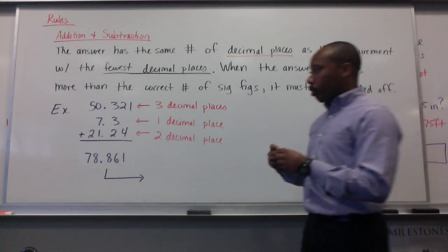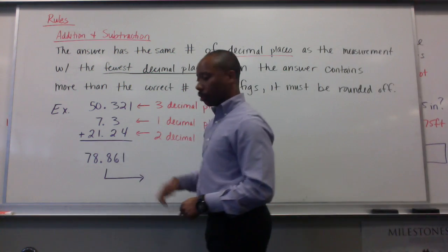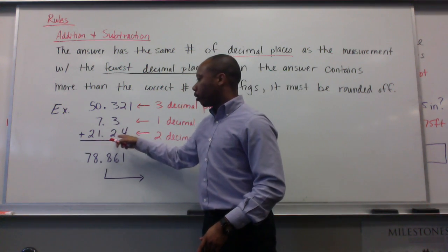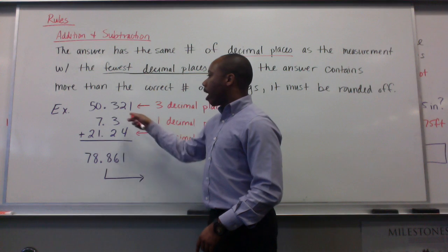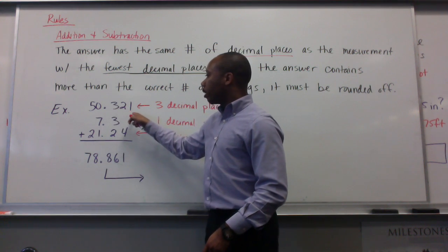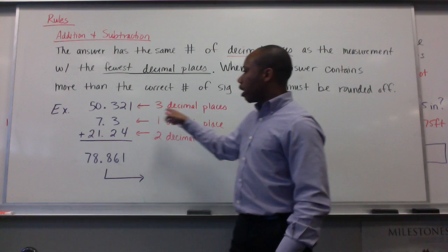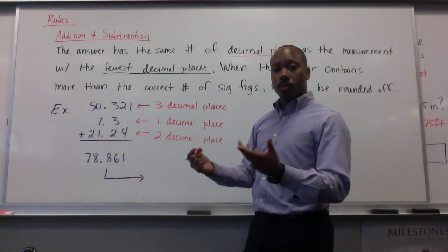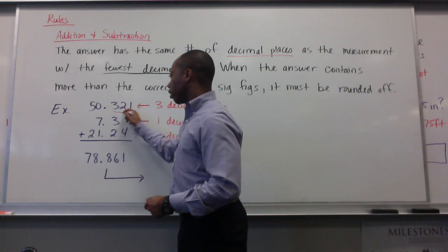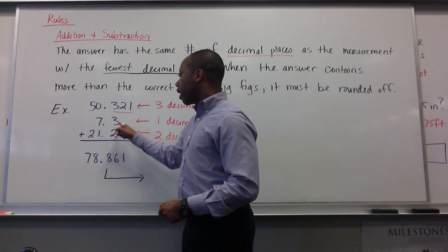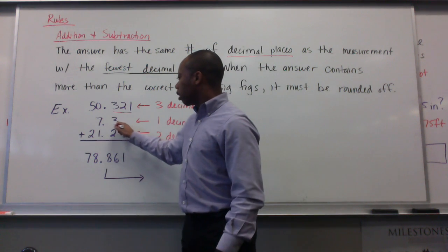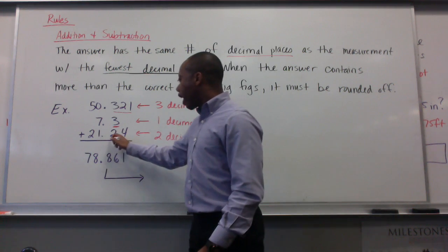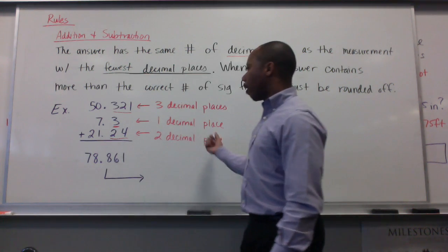Here's an example. We have these three numbers being added together: 50.321, 7.3, and 21.24. Now, 50.321 has three decimal places after the decimal. 7.3 has one decimal place after the decimal. 21.24 has two decimal places after the decimal.